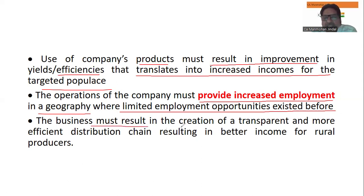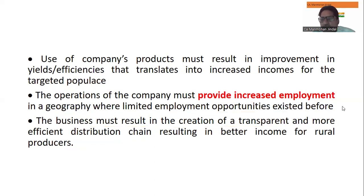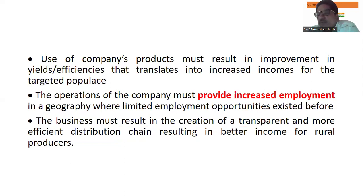The business must result in the creation of a transparent and more efficient distribution chain, resulting in better income for rural producers. The government also promotes rural income improvement. Among the 17 SDG goals, targets include no poverty, no hunger, increased employment, and gender equality — all of which social enterprises must work toward meeting.